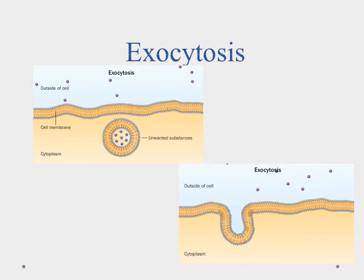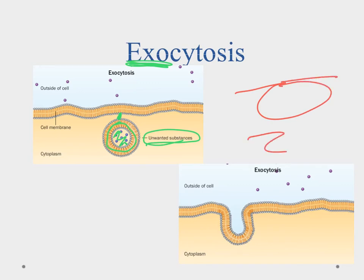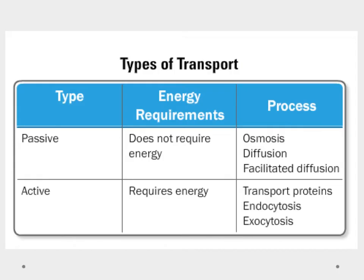Endocytosis brings stuff in; exocytosis gets stuff out. If there are unwanted substances inside the cell, a membrane-bound vacuole containing those substances merges with the cell membrane. It splits open and releases all the substances outside of the cell. So endo means coming in, exo means to exit or go out.